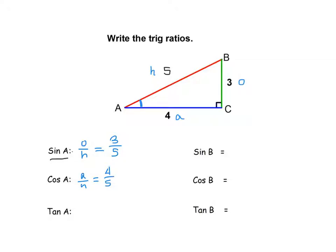Tangent of A, that is opposite over adjacent. So the opposite side is 3, the adjacent side is 4.